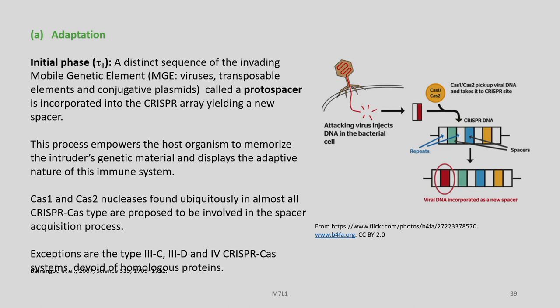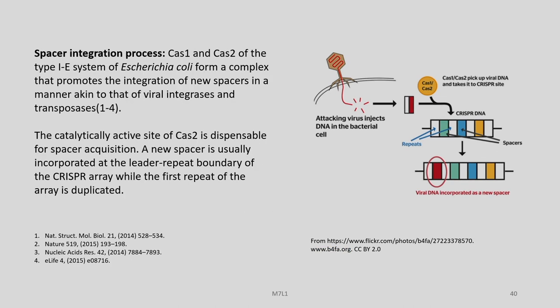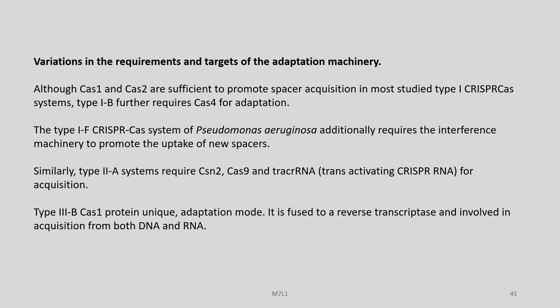Cas1 and Cas2 nucleases are found ubiquitously. In the spacer integration process, Cas1 and Cas2 form a complex that promotes integration of new spacers in a manner similar to that of viral integrases and transposases. The catalytically active site of Cas2 is dispensable for spacer acquisition. A new spacer is usually incorporated at the leader-repeat boundary of the CRISPR array while the first repeat of the array is duplicated. Cas1 and Cas2 are sufficient to promote spacer acquisition in most studied type 1 CRISPR systems.